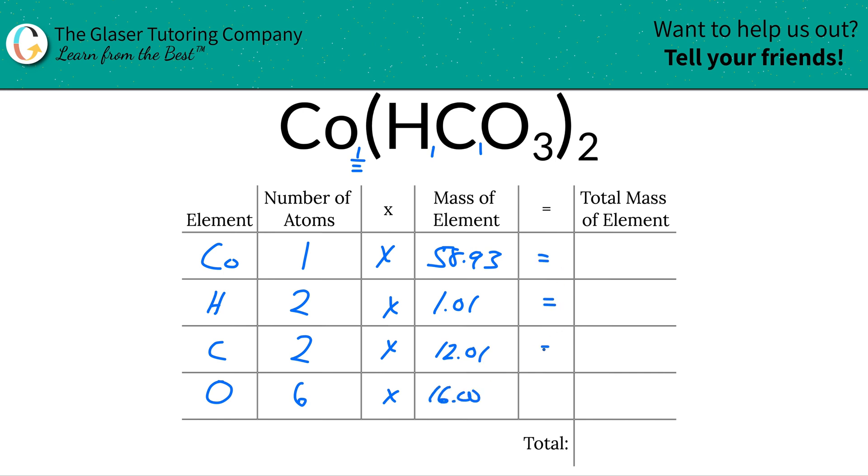Then all you have to do now to find the total mass of each element in the compound is simply multiply the row across. This is the mass of one cobalt, and since I only have one cobalt, I just take one and multiply it by the mass, which would give us 58.93.